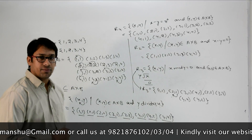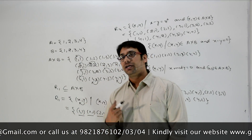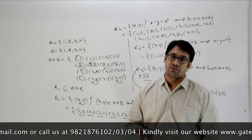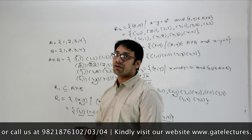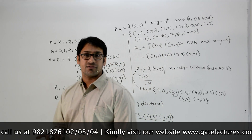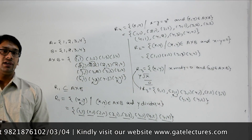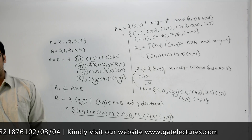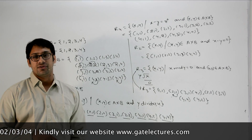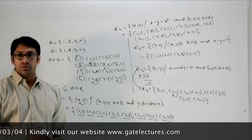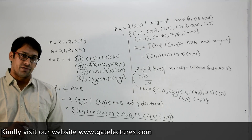This is a very simple example of a relation. Now let us look at what the different types of relations are. We can have a reflexive relation, a symmetric relation, an asymmetric relation, an anti-symmetric relation, and so on. Let us look at what these different kinds of relations are.